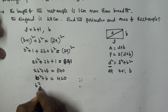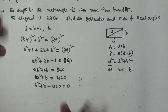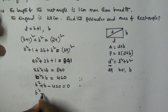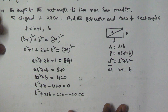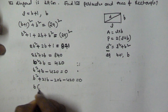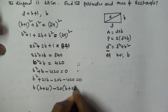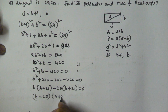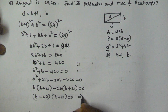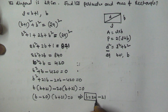So we get the quadratic equation b² + b - 420 = 0. This can be factored as (b - 20)(b + 21) = 0, giving b = 20 or b = -21. Since breadth can never be negative, b = 20.